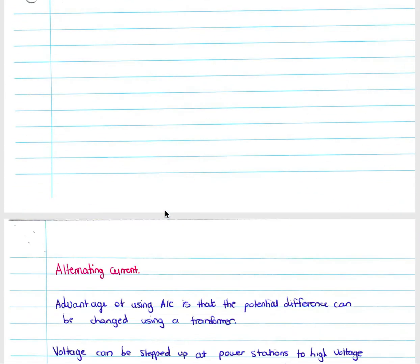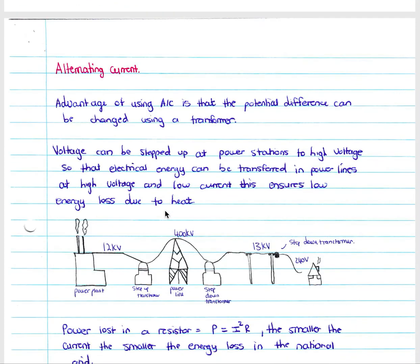That is very useful when we look at the way we move current through our cities and through our power grid. The advantage of using alternating current is that the potential difference can be changed using a transformer. As we've discussed, our transformer can either step up or step down our voltage, and therefore we can change the voltage.